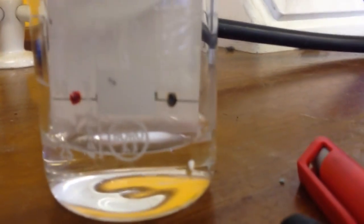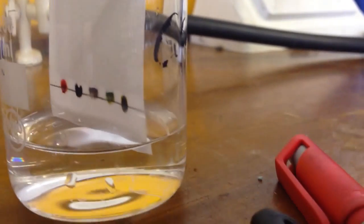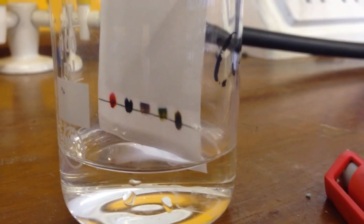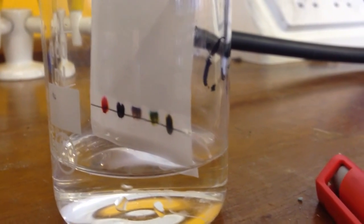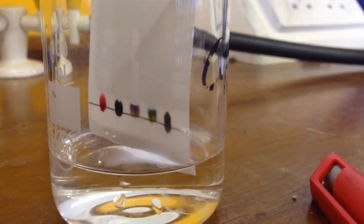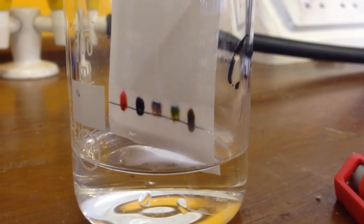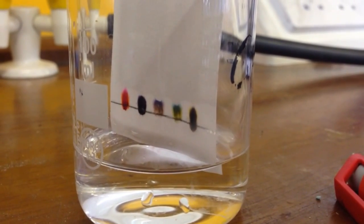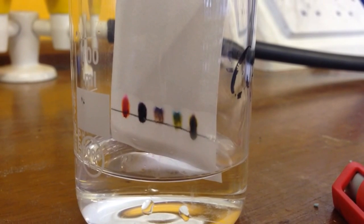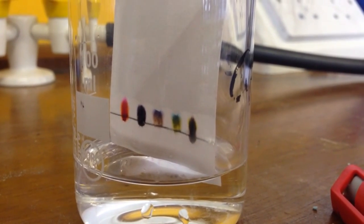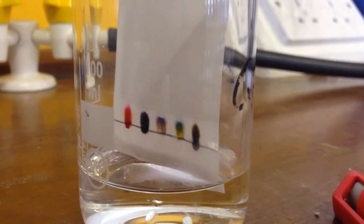We can see that the level of the water is in between the bottom of the paper and the pencil line, and we can see already that the colors are starting to move up the paper. We can see that it's starting to separate out. We'll come back to this once the water has moved all the way up to the top of the paper.